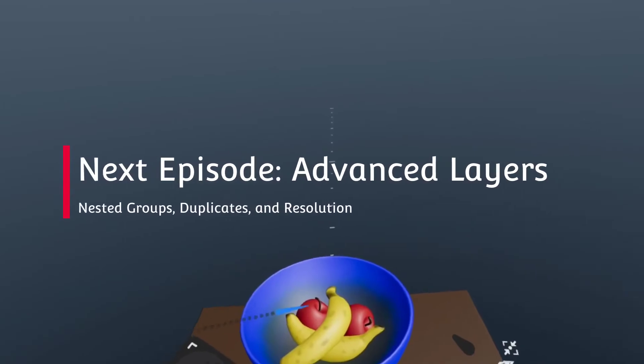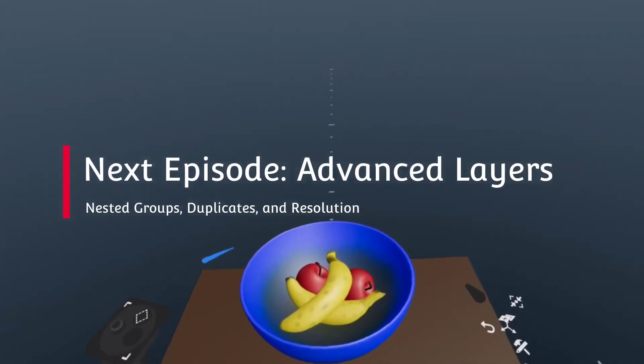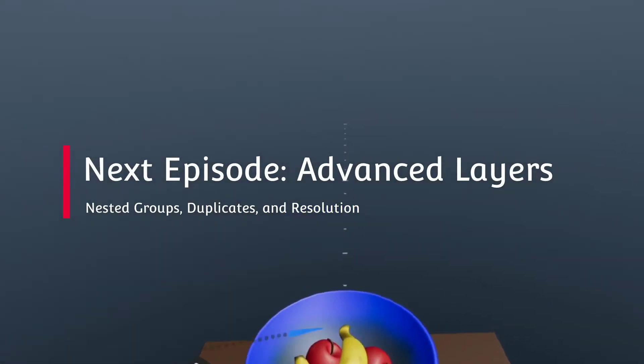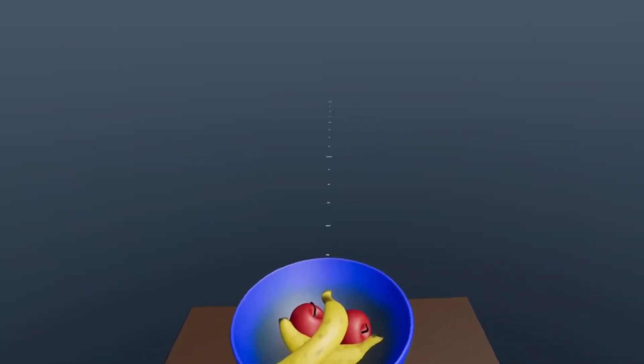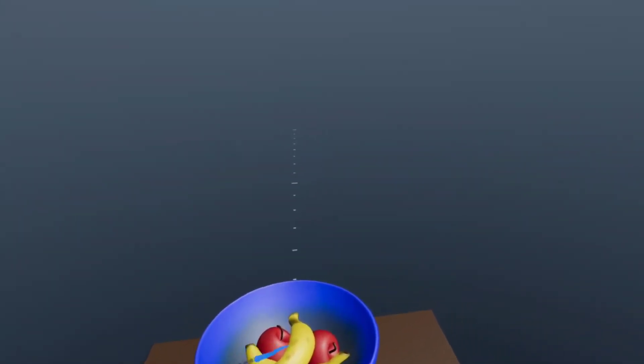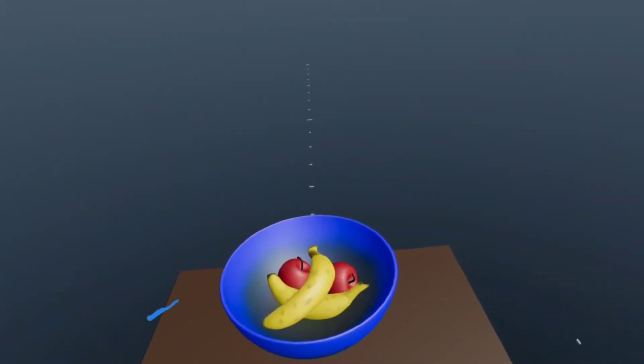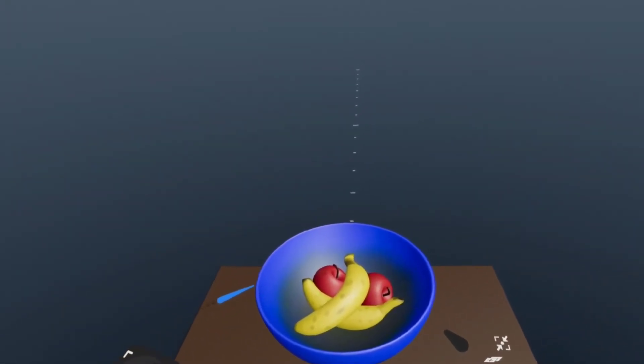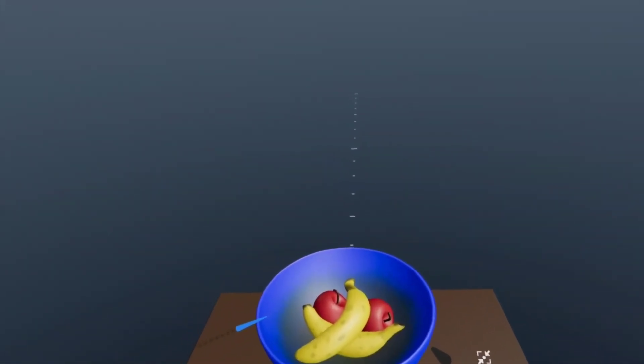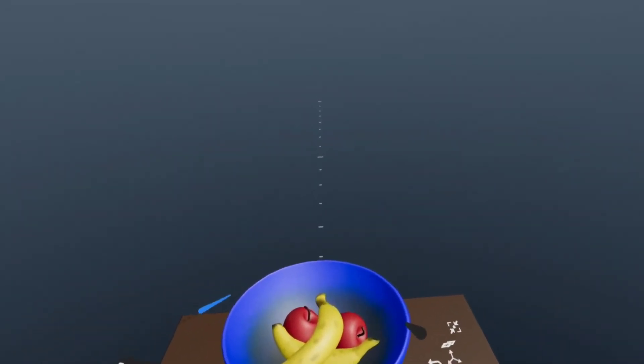So in the next video, what we'll talk about is more advanced layer techniques, things like merging, things like subgroups. And that's how you're going to get the same thing as you would get with hierarchies in Adobe Medium. And then we'll talk about the added footnote of resolution as well, which is something that is secondary, but is also kind of goes hand in hand with layers.